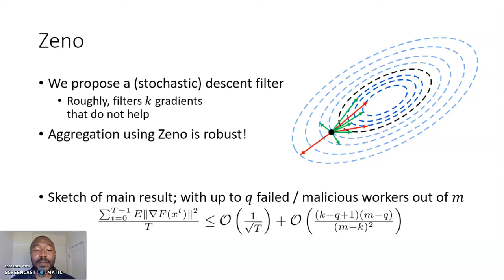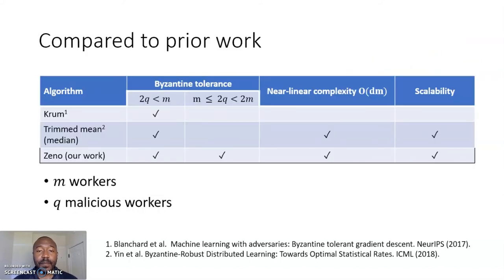That is, with up to Q failed or malicious workers out of M, convergence using Zeno aggregation incurs an additional cost that grows with number of failed devices, but also improves with minimal filtering. Thus, ideally, the number of filter gradients is balanced by the expected tolerance for anticipated failures. To get a better understanding of this work, it's useful to contrast with some previous work.